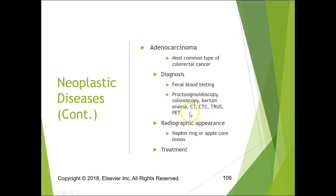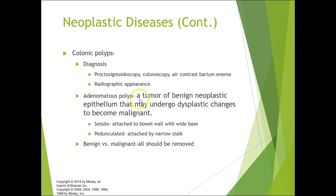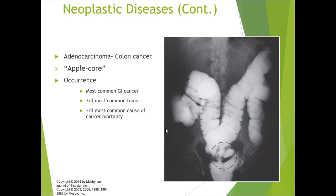Adenocarcinoma is the most common colorectal cancer. Blood in the stool from colorectal cancer is dark red — not bright red like hemorrhoids, which are anal varices. This is a GI bleed. Colorectal cancer is the third most common GI tumor and third most common cause of cancer mortality. The classic radiographic appearance is the napkin ring or apple core lesion. By the time it's found, it has often metastasized.